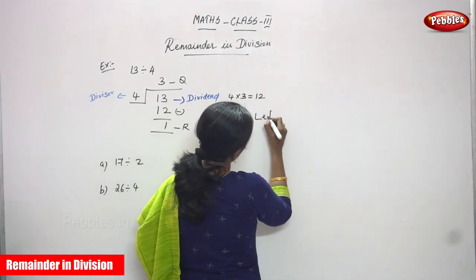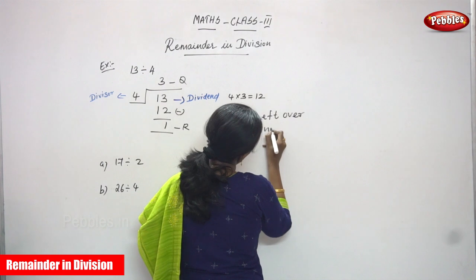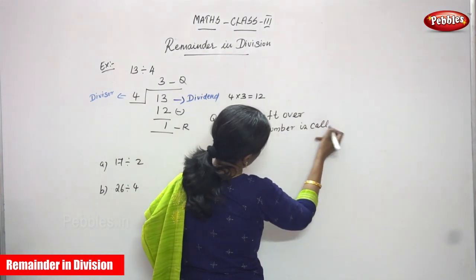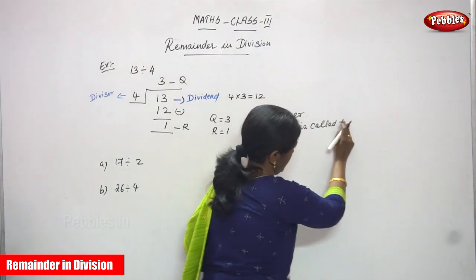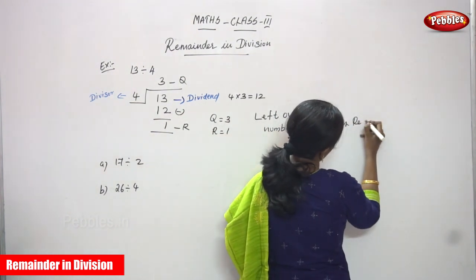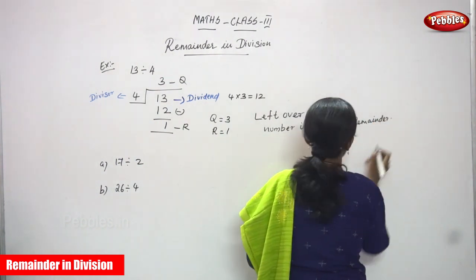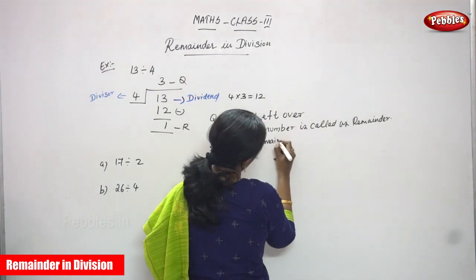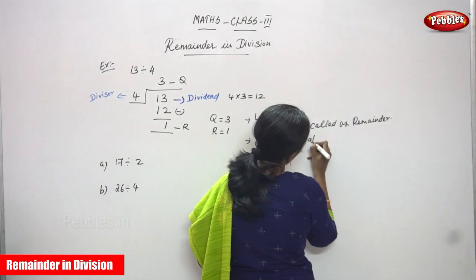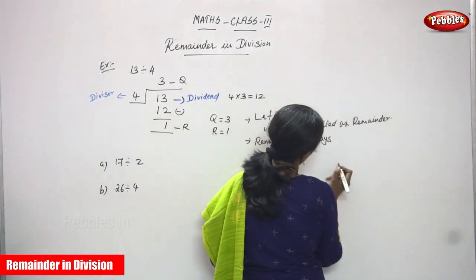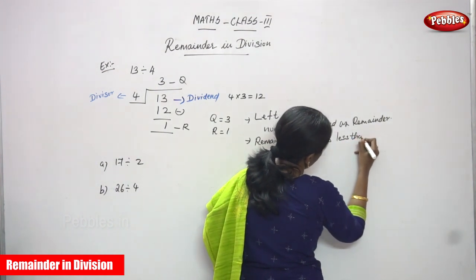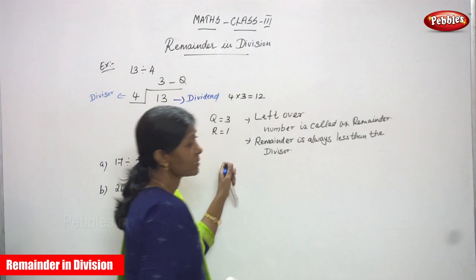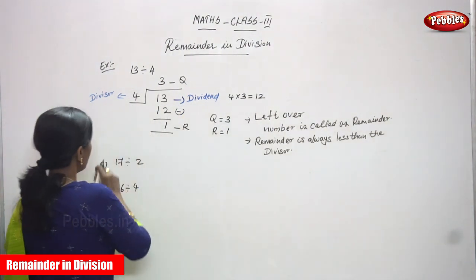I will write this: leftover number is called as a reminder. Reminder is always less than the divisor. These are the rules. So don't forget the rules while you do the division. Next — these are the examples. Now we are going to solve the problems.